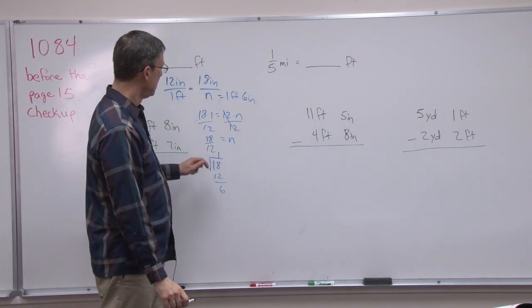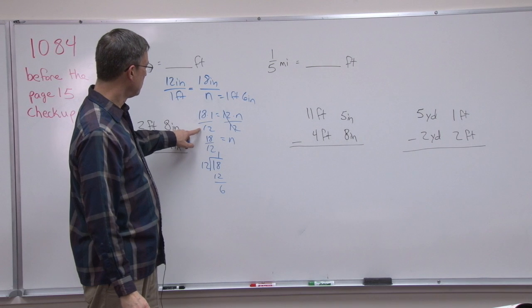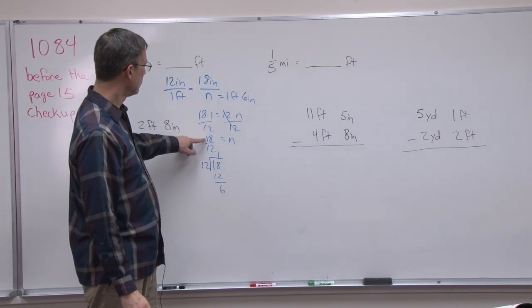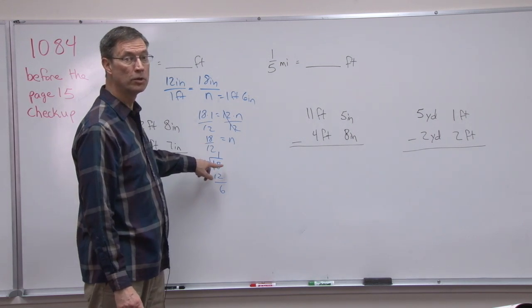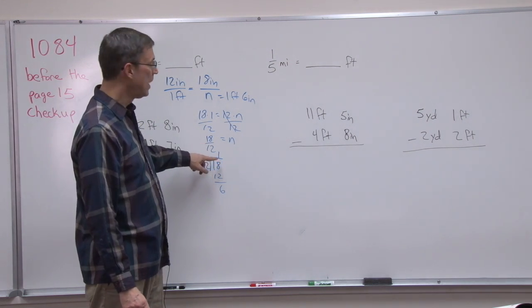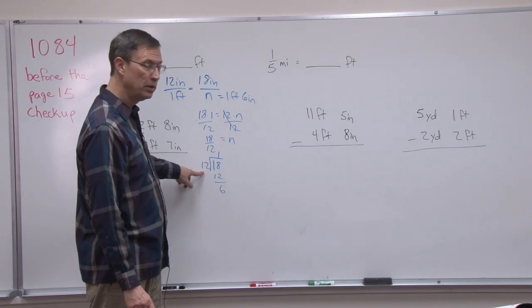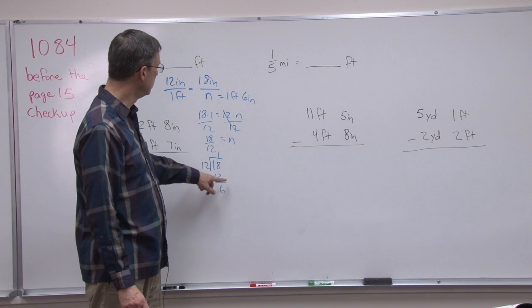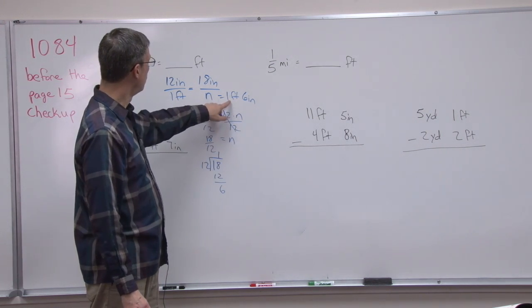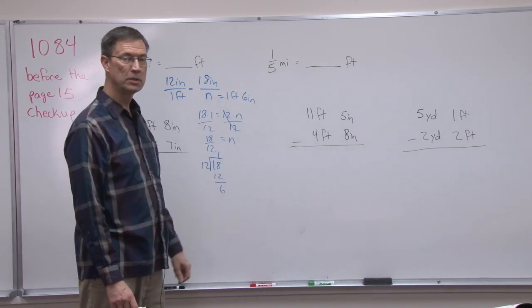So sometimes the confusing step is when you get to here, what do you do? We simplify any fraction by taking the top number and putting it under the doghouse, as I always call it, and then divide by the denominator. When you do that, we get 1. The remainder is the inches. So we have 1 foot with 6 inches left over.